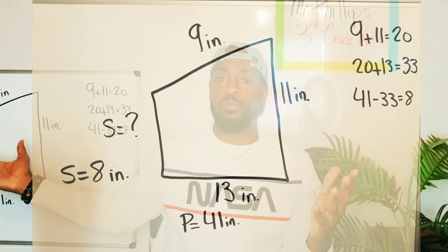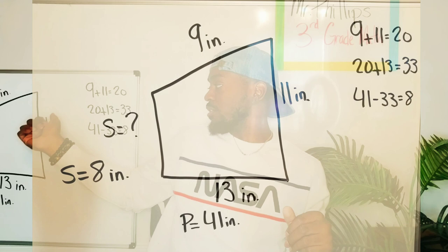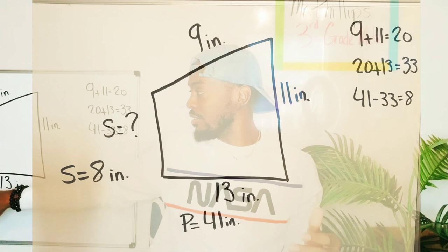So on my board here, I wrote it out for us to see as well. Just another photo for us to check this out. So we have the total perimeter, which is 41. I added up all the sides. I said 9 plus 11 was 20. 20 plus 13 is 33. 41 minus 33 is 8. So 8 is our missing side.